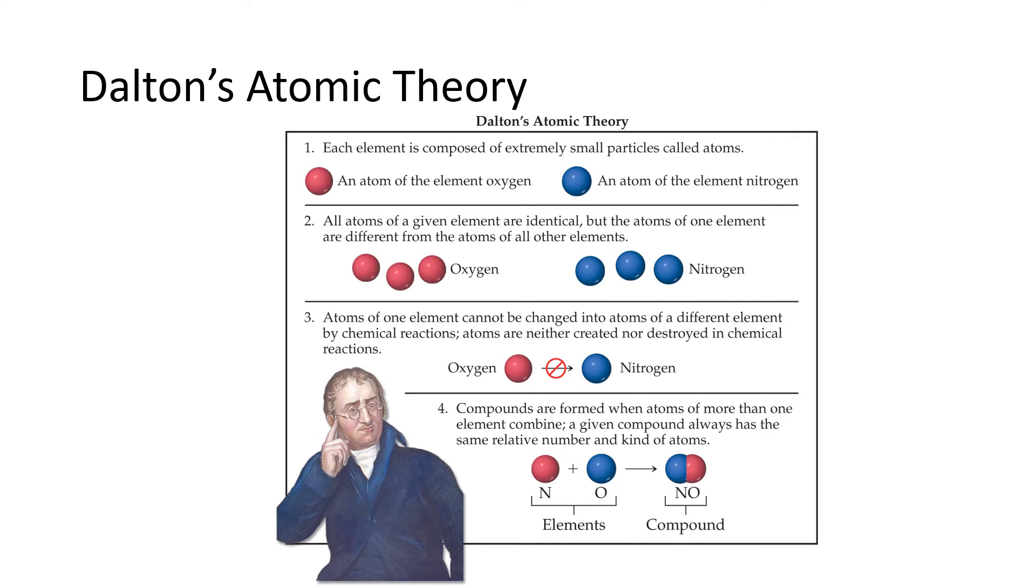So Dalton's atomic theory had four postulates or four ideas. The first one says that each element is composed of extremely small particles called atoms and then that all atoms of a given element are identical, that the atoms of one element differ from the atoms of the other elements. Additionally, you cannot change an atom of one element into a different element. A corollary to that is that we are not going to create or destroy atoms in chemical reactions.